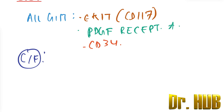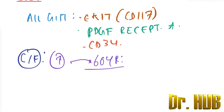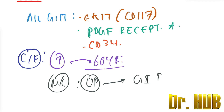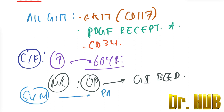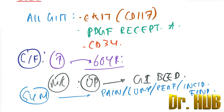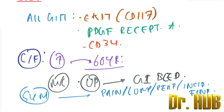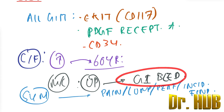Looking at the clinical features: there is a peak at 60 years of age. The most common symptom is upper GI bleed. Other symptoms include pain, presence of a lump, perforation, as well as some incidental findings.